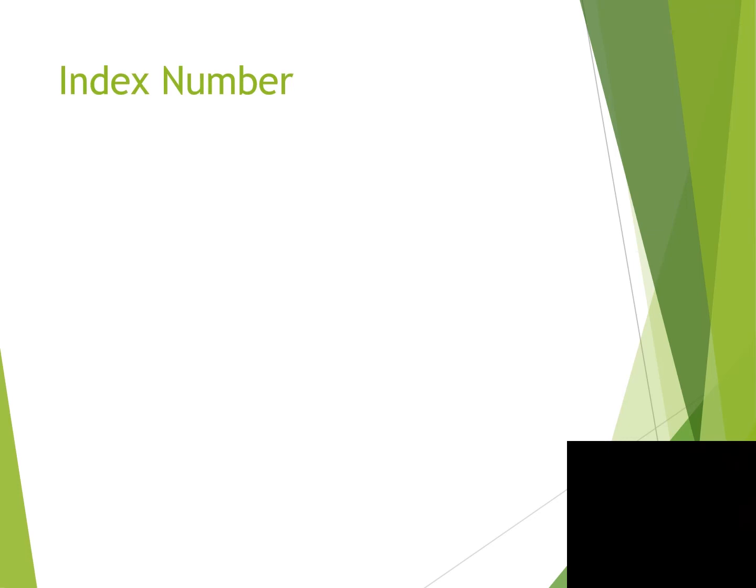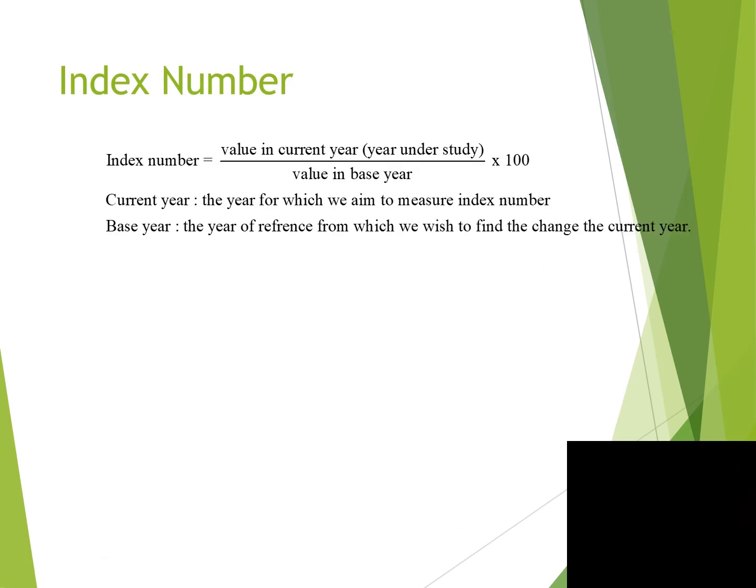The index number formula is: Index Number = (Value in current year / Value in base year) × 100. The current year is the year for which we aim to measure the index number. The base year is the year of reference from which we wish to find the change.